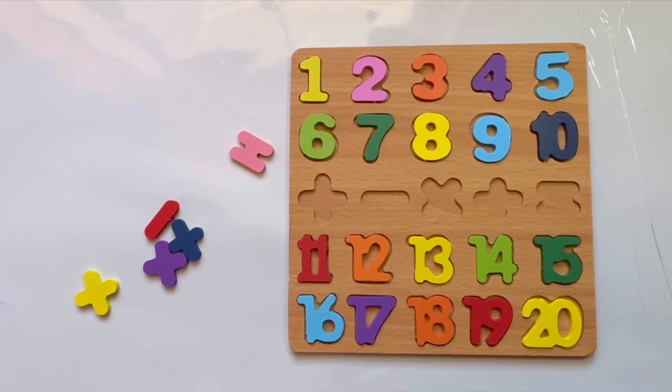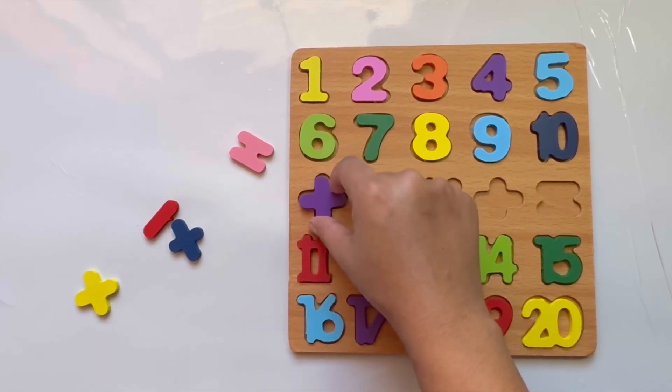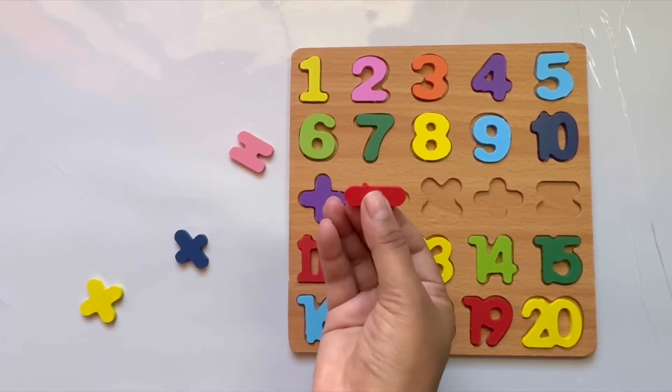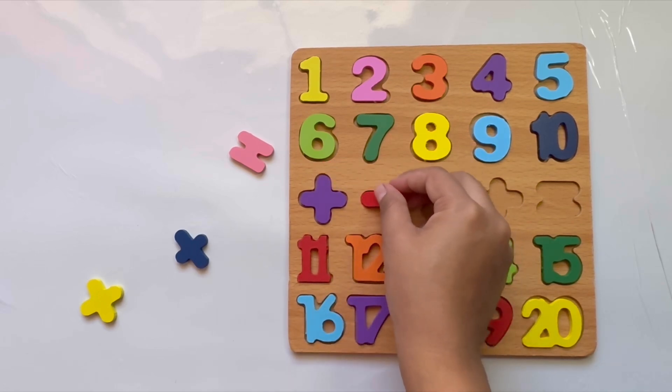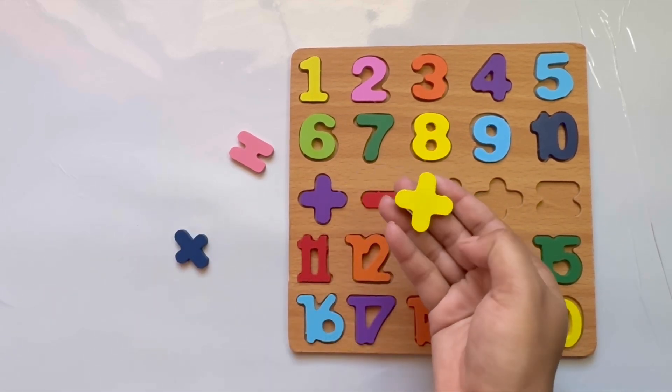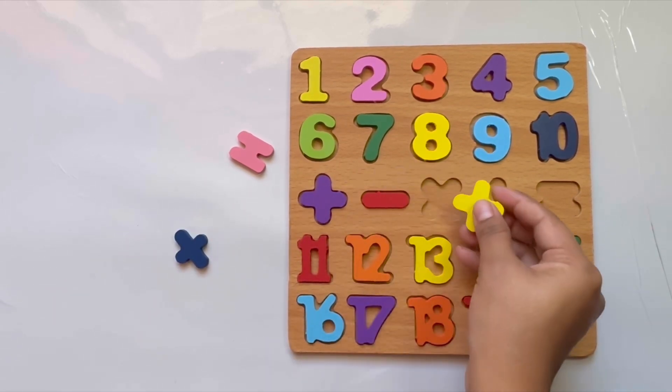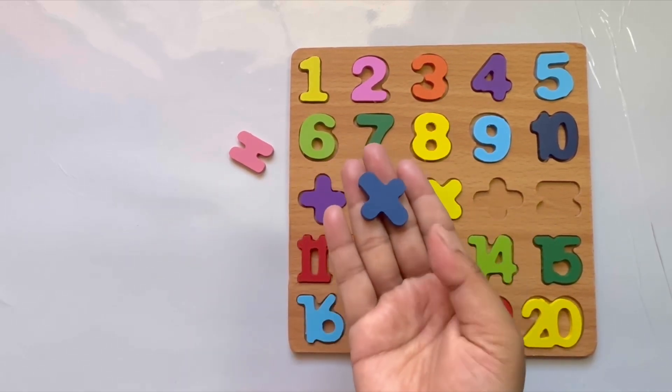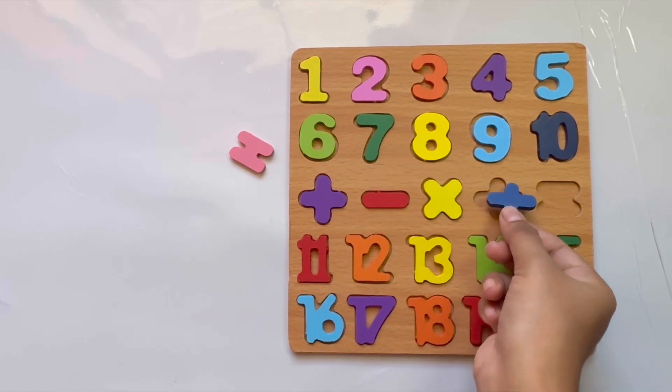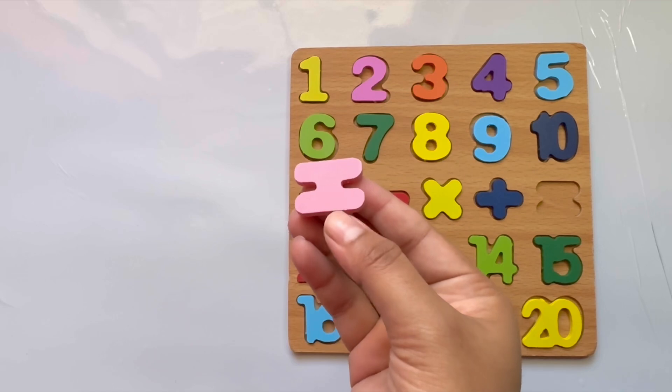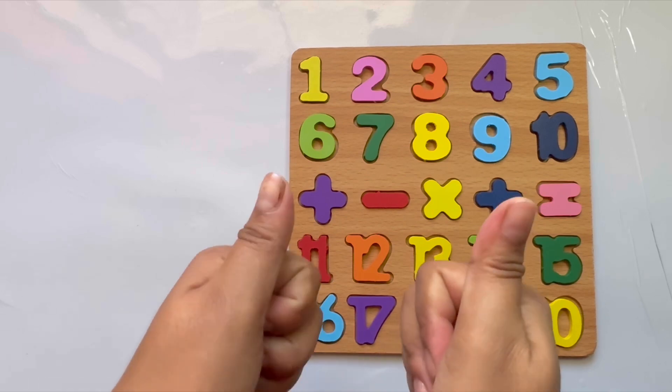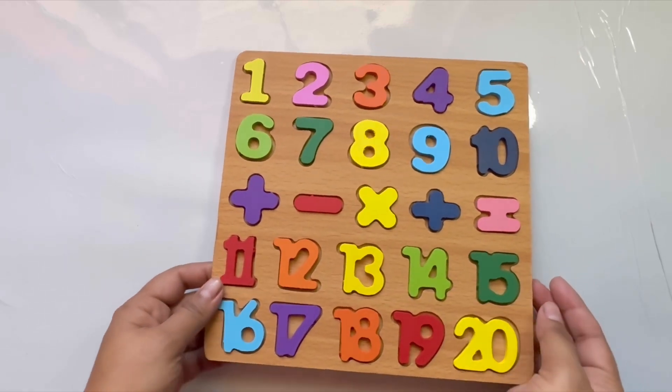Let's find out plus symbol. Yes, it's fitting perfectly. Let's find out multiply symbol. Is it fitting perfectly? Yes, it's fitting perfectly. Again, this is plus symbol. And this is equal to symbol. And this is equal to symbol.